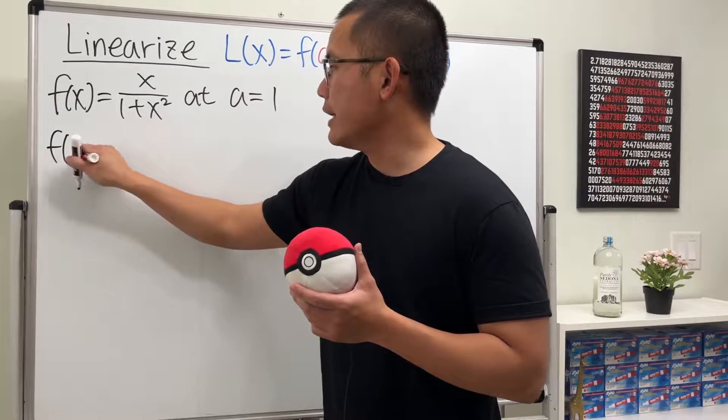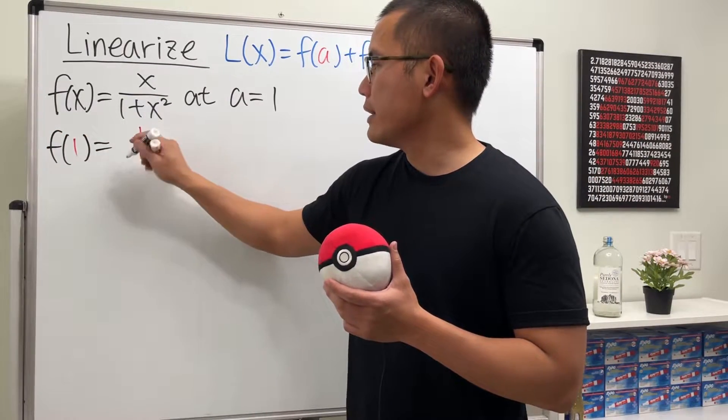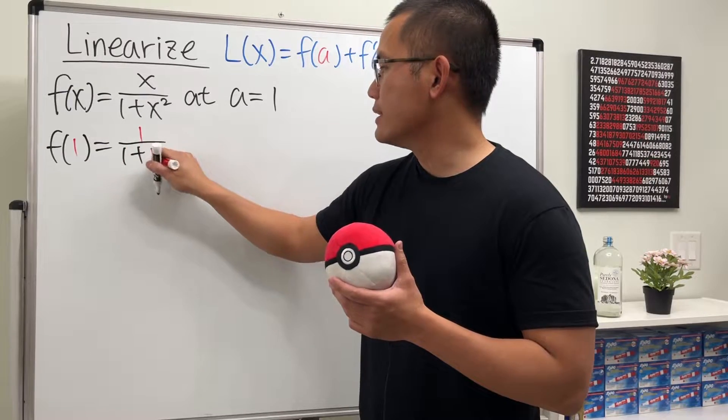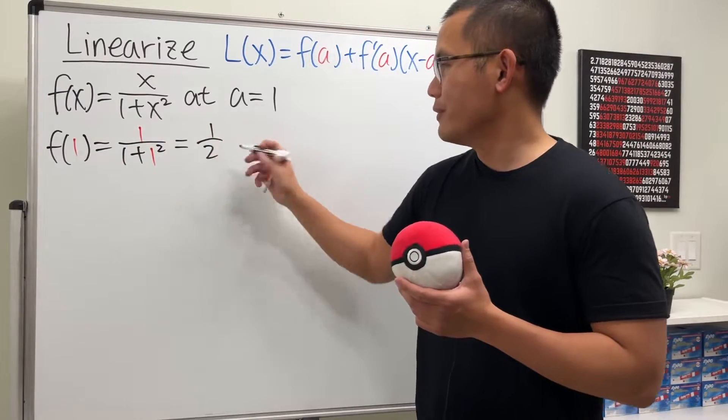First, let's compute f of 1, and that will just be 1 over 1 plus 1 squared. And that will just be 1 over 2. Pretty nice.